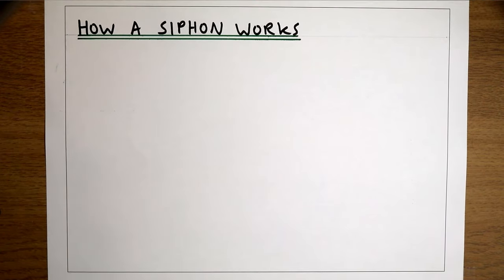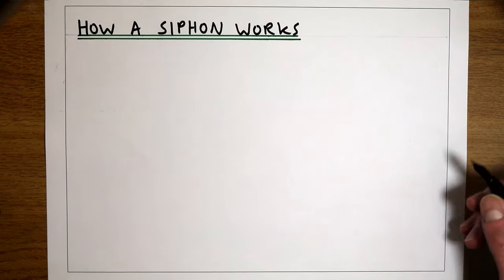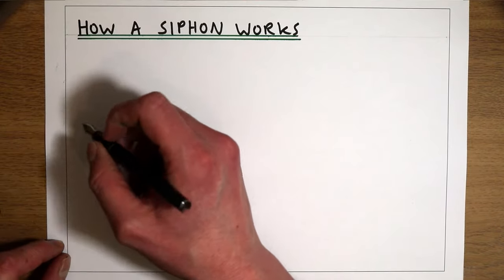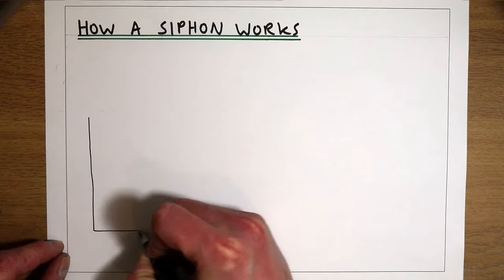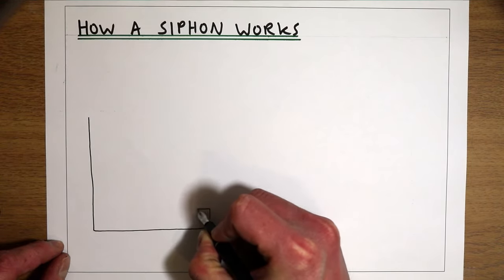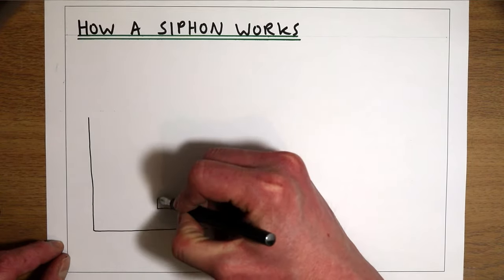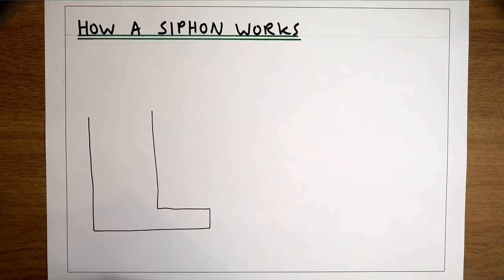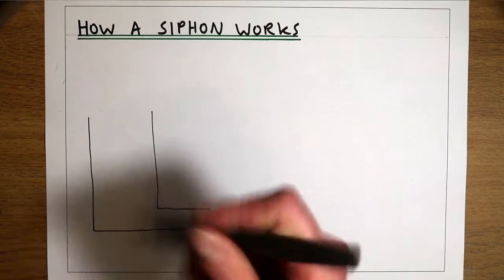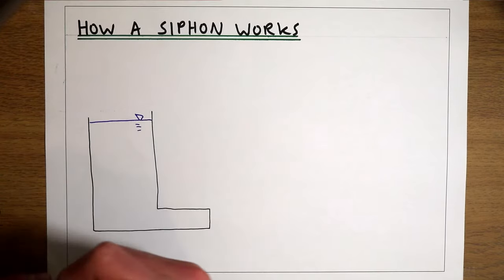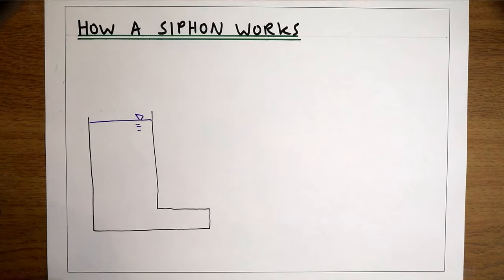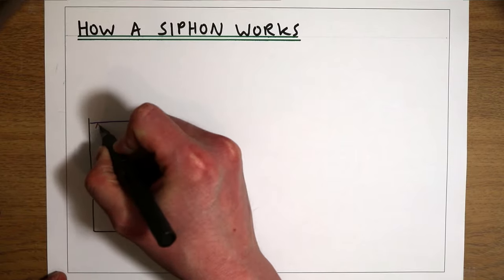In this video we're going to look at how a siphon works, but before we look at that we need to think about how a normal flow works. So if we imagine a simple flow where we've got a tank of water with a pipe coming out the base of the tank, and there's water in that tank filled to a certain level H.